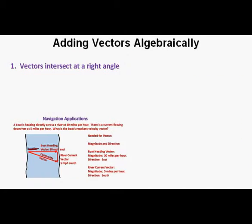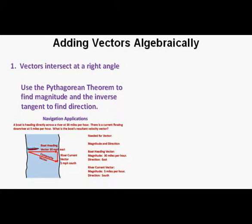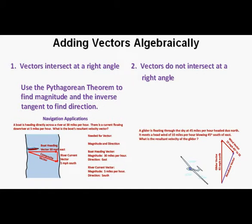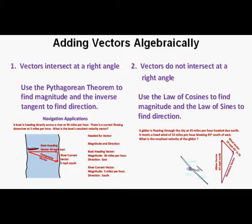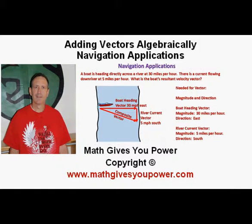In this video lesson emphasizing navigation problems, we worked on two types. First, three problems where vectors intersect at a right angle — for these we used the Pythagorean theorem to find the magnitude and the inverse tangent to find the direction. Second, three problems where the vectors do not intersect at a right angle — for these we used the law of cosines to find the magnitude and the law of sines to find the direction. This has been Adding Vectors Algebraically: Navigation Applications. Thanks for viewing.